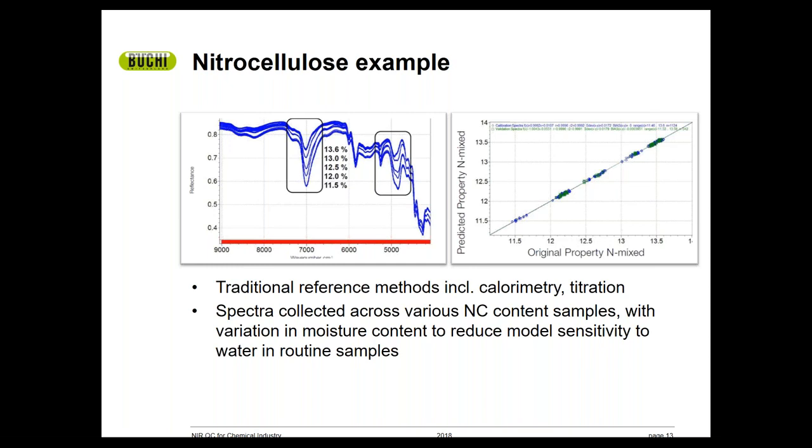The spectra on the left were then used to create a mathematical model to predict or measure future samples. The reference versus predicted plot for that model is shown in the figure on the right. The traditional methods for nitrogen content determination are both complex and time consuming, requiring multiple hours to complete, whereas the NIR method was accomplished in less than a few minutes.